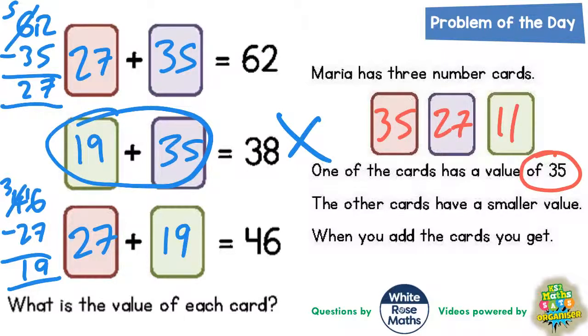The only other way of doing it would be to make this 19 here worth 3, because then 3 plus 35 is 38.